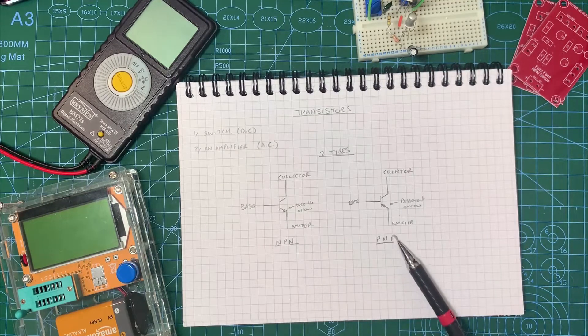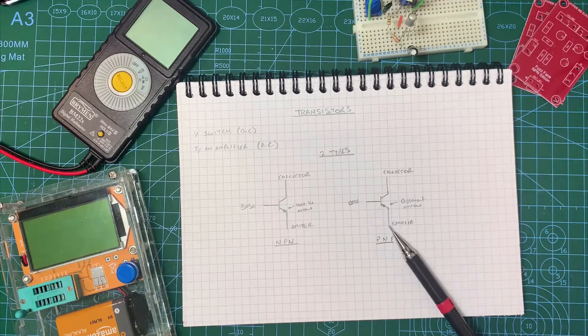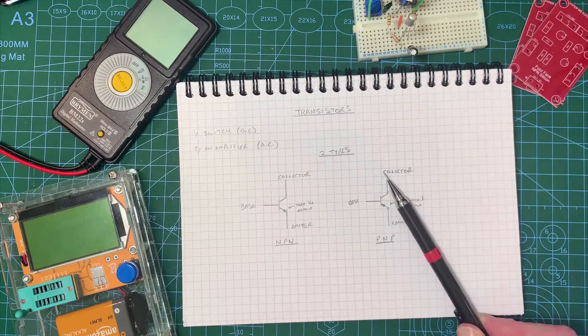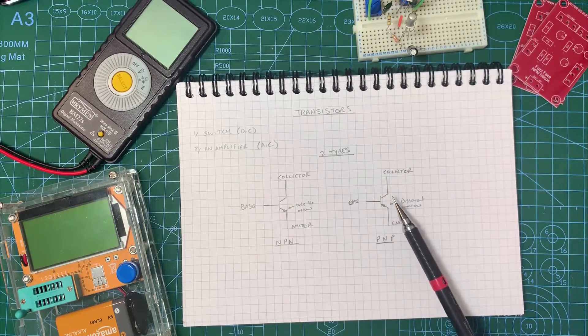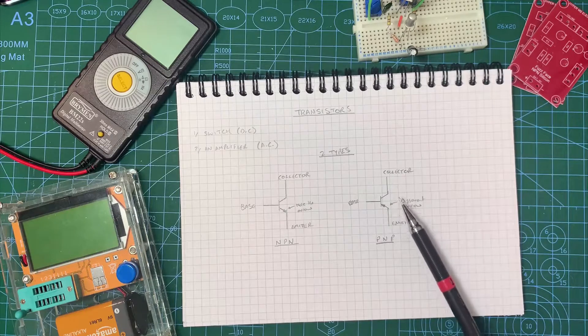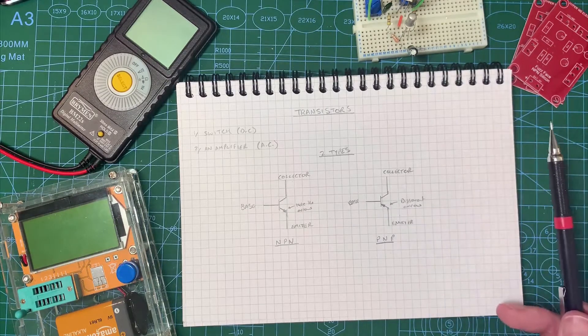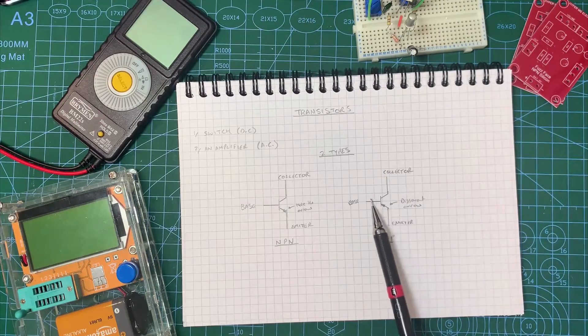PNP is the opposite way around. So what happens is the current flows into the emitter and through here and out of the collector. And as such, we either have to use a negative power supply with a positive ground, as we will be using in a fuzz face circuit, or we have to remember when it's a switch that is ordinarily off.